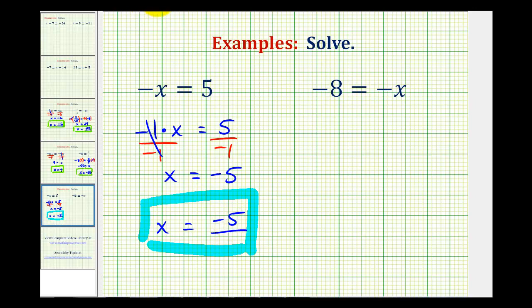In our second example, we'll approach this the same way, even though the variable is on the right side. So we'll write this as negative 8 equals negative 1 times x. Again, recognizing that negative 1 times x is equal to negative x.